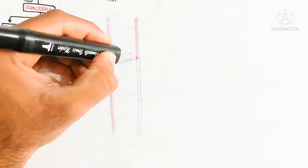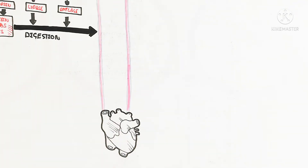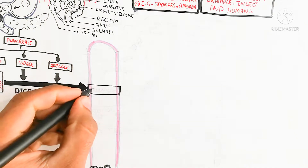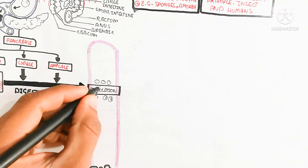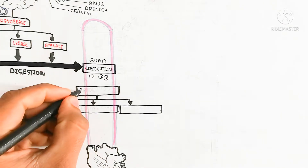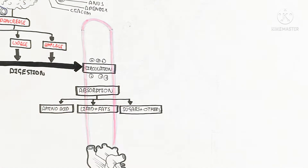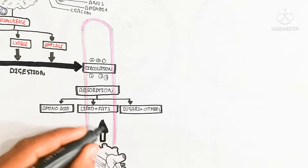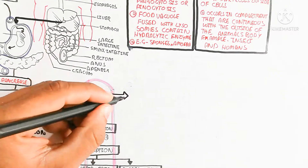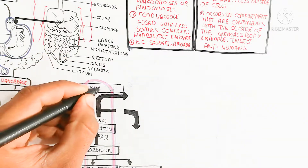Complete digestion also involves brush border enzymes of the enterocytes. After complete digestion, absorption occurs into the blood circulatory system. Absorbed molecules include amino acids, lipids, fats, sugars, vitamins, and ions. After absorption, hyperglycemia, hyperaminoacidemia, and hyperlipidemia occur as nutrients are distributed to tissues for energy, development, and growth.